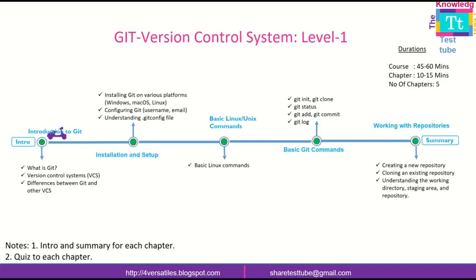Under Level One we have five topics: introduction to Git, installation and setup, basic Linux/Unix commands, and also DOS commands — MS-DOS commands — because they are a little essential while working with Git, especially on the command line way of managing repositories. After learning basic Linux/Unix commands, we cover basic Git commands with demos, and then repositories. Level One is planned to be completed in one hour, with each chapter taking about 15 minutes.